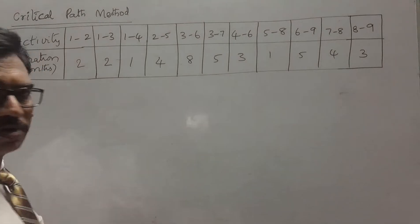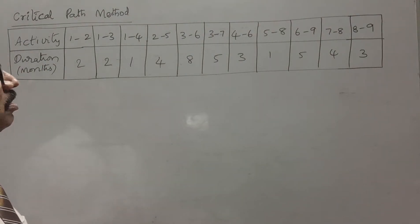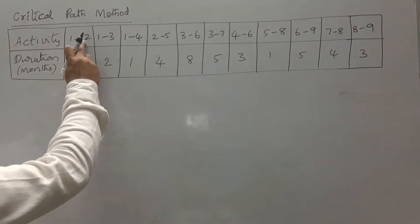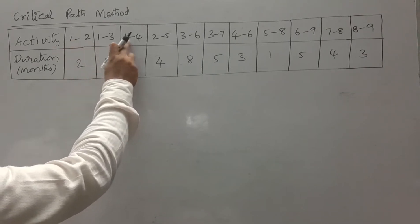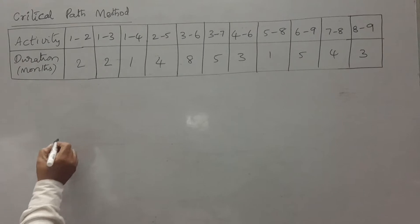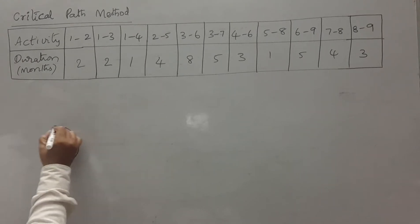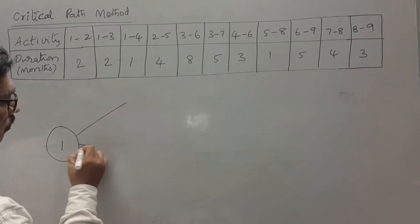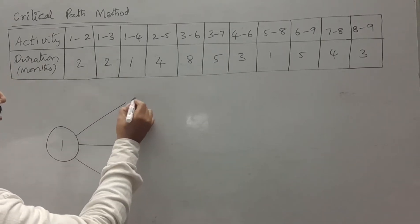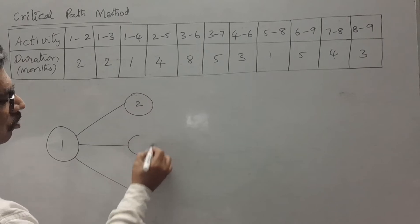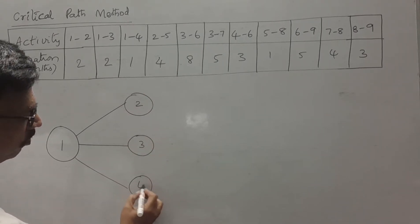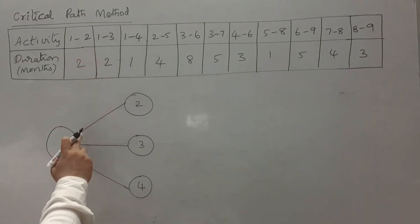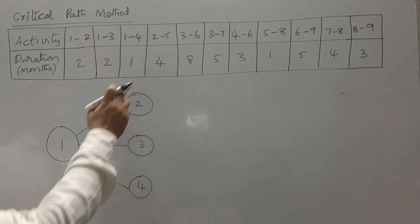Let us construct the network for this given set of activities based on the precedence relationship among them. Here we have three activities: 1-2, 1-3, 1-4. For these three activities the starting node is 1. So from node 1, let us draw 3 branches to nodes 2, 3, and 4. These are the 3 activities drawn.